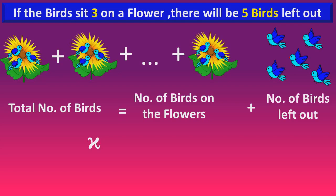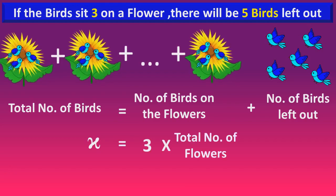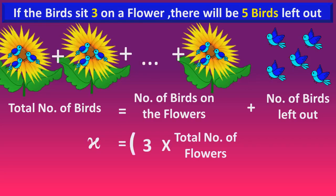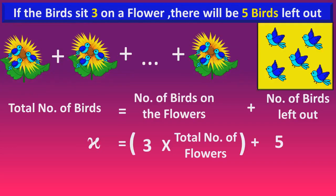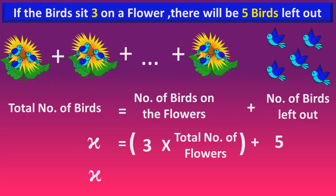The total number of birds is X. Since there are three birds on each flower, the number of birds on the flowers is 3 times Y. The number of birds left out is 5. So, X is equal to 3Y plus 5. This is equation 1.